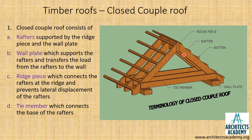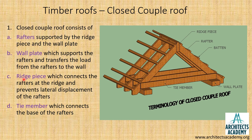On top of the rafters, perpendicular to the rafters, are the battens. At the top of the rafters there is a piece called the ridge piece, which runs along the entire length of the roof. The closed couple roof consists of rafters supported by the ridge piece and the wall plate.